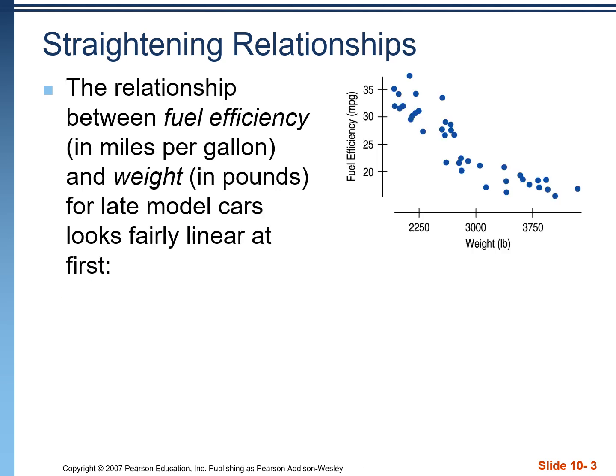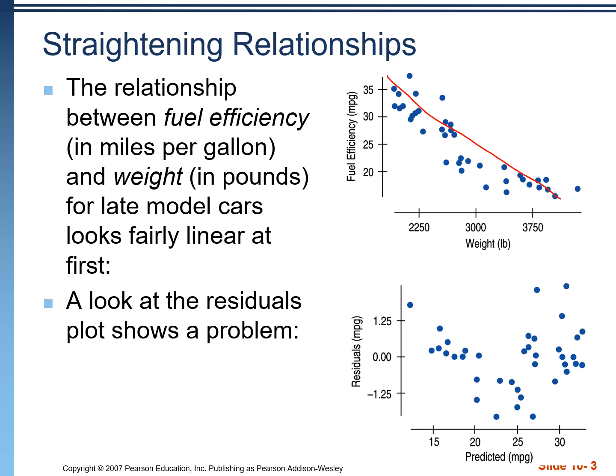In this example, we have fuel efficiency in miles per gallon and weight in pounds for late model cars. When we look at it at first, it looks approximately straight, but when we run the regression analysis and look at the residual plot, we see a distinct curve in the data. That's telling us that this is a non-linear relationship. We have a curve in our original scatterplot.